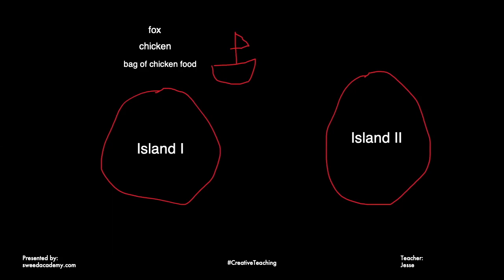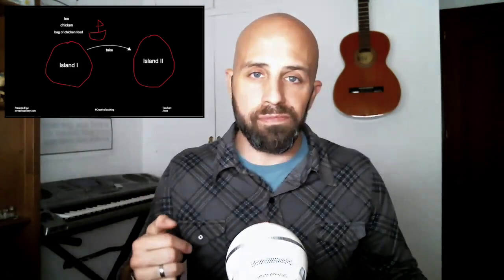The riddle: I have a fox, a chicken, and a bag of chicken food on island one. The goal is to get all three things to island two. But the problem is your boat is very small and you can only take one item at a time. For lower-level classes, you'd also need to teach the word 'take.' The key problem is: if you leave the chicken and the fox together, the fox will eat the chicken; if you leave the chicken with the bag of chicken food, the chicken will eat the chicken food. So how do you get all three items from island one to island two?